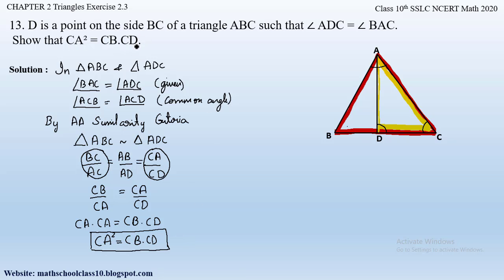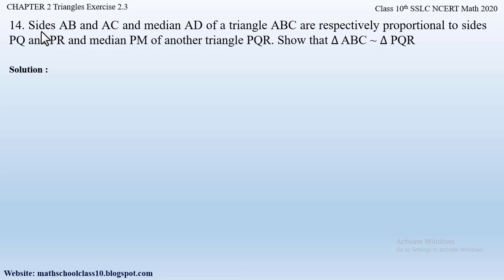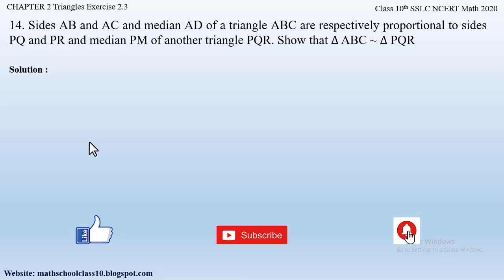This is very simple: since we had to show CA² = CB × CD, we considered triangles ABC and ADC, proved them similar using the given angle and the common angle, then took the ratios of corresponding sides to derive the result. If you have any doubts, comment below. In my next video I'll solve question 14 from exercise 2.3. Do like, subscribe, and hit the bell button for updates. Thank you.